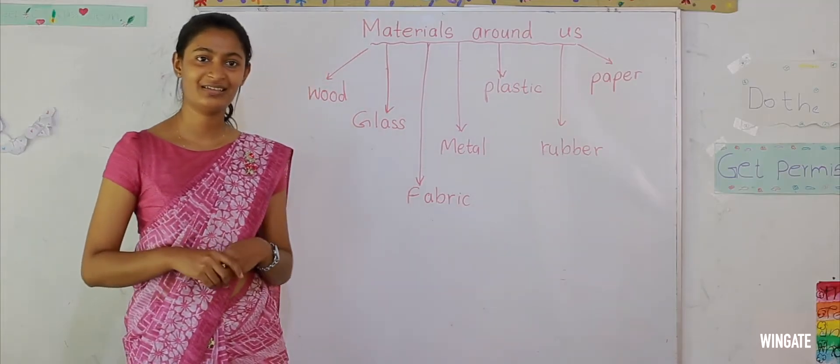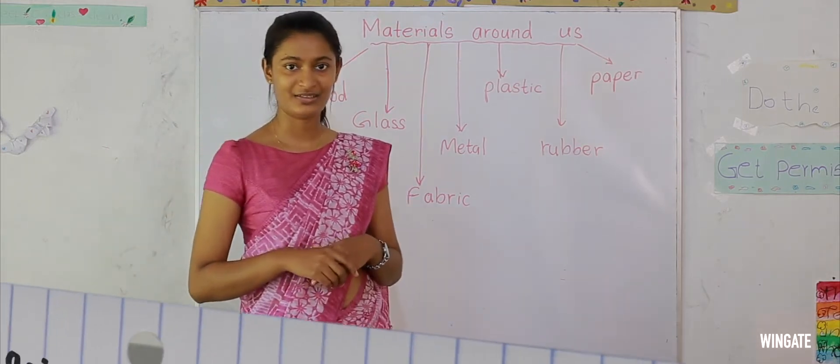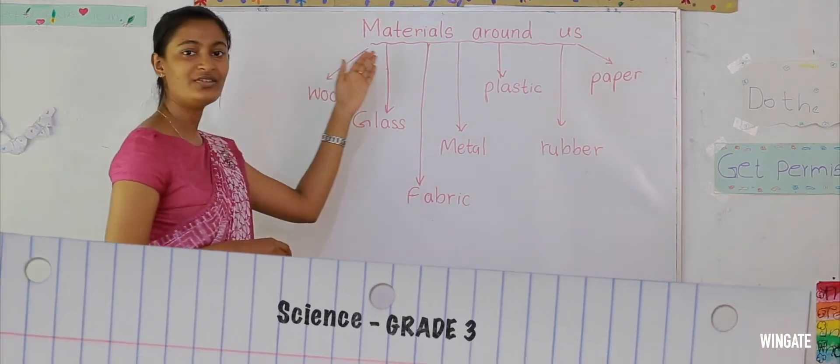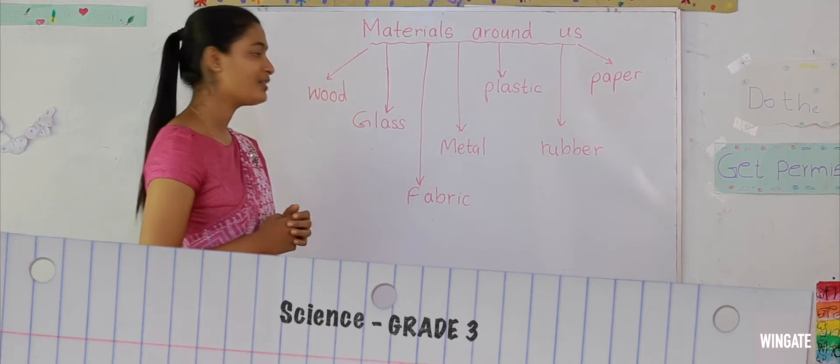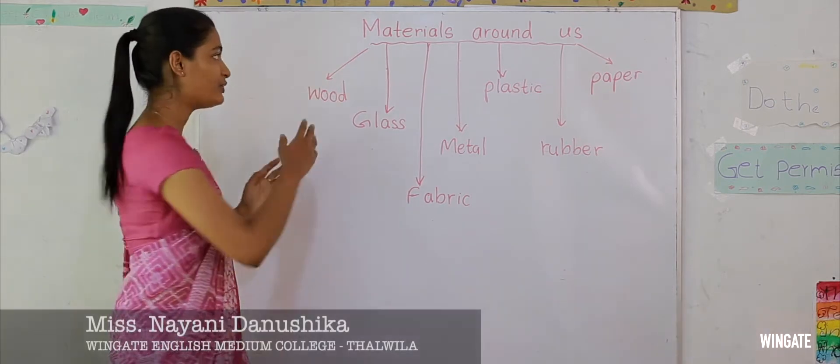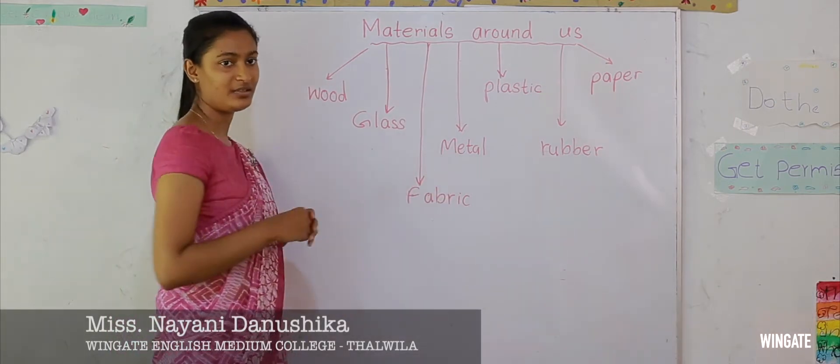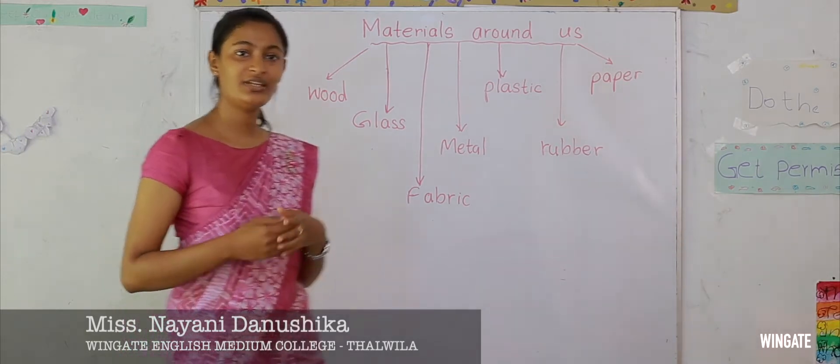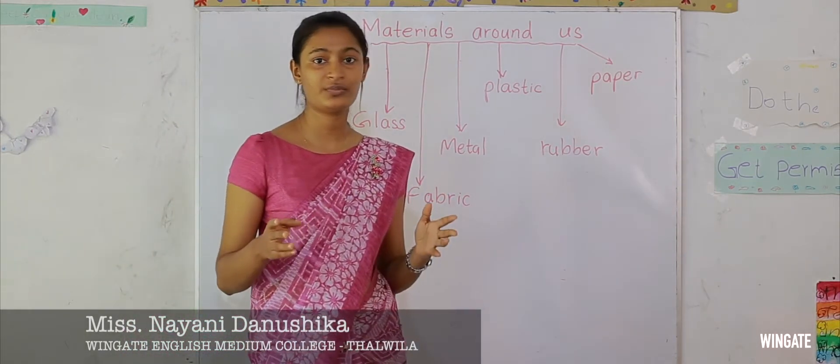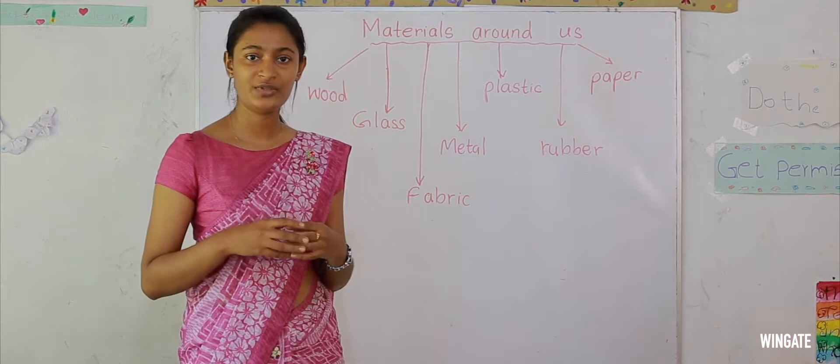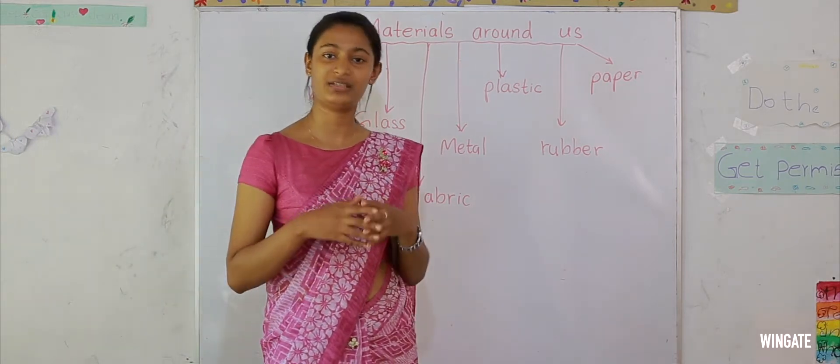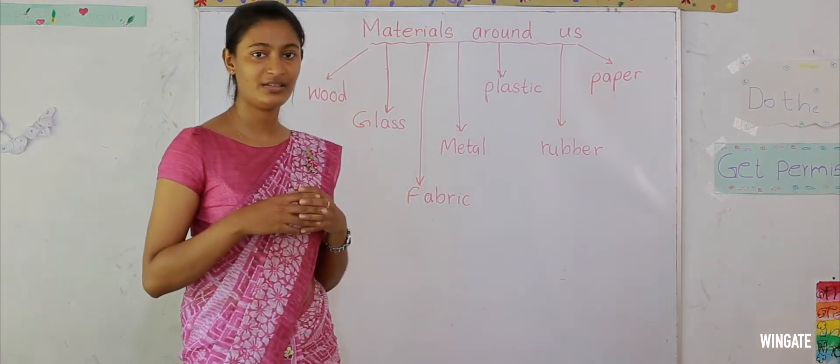Good morning children. Today I am here with the science lesson, materials around us. So today we are going to learn about different types of materials. In our day-to-day life we use different types of objects. These objects are made of different materials. We will see what are these materials.